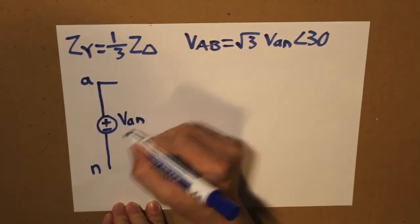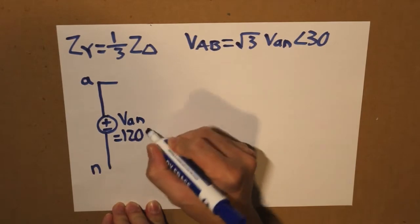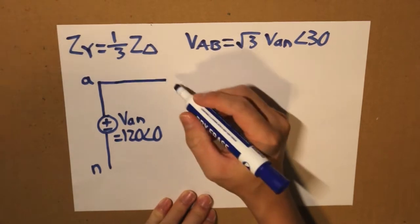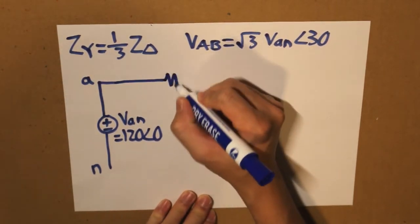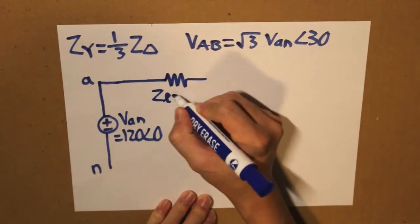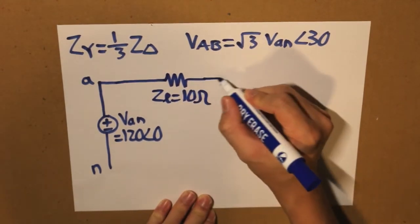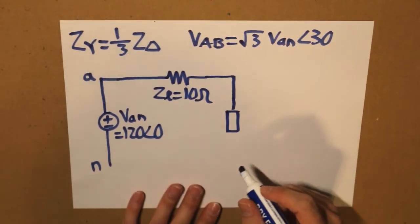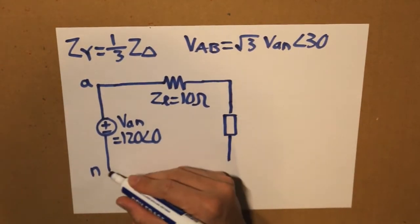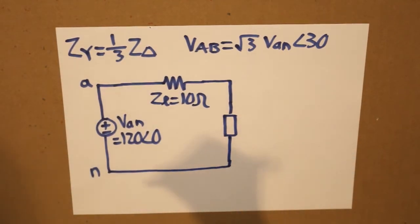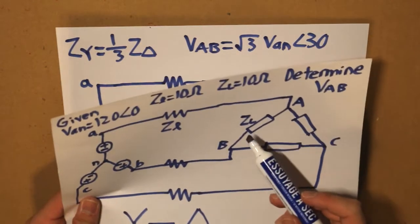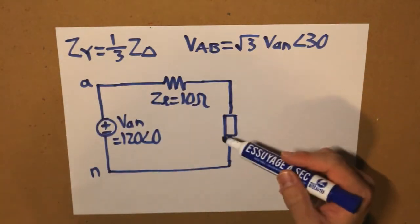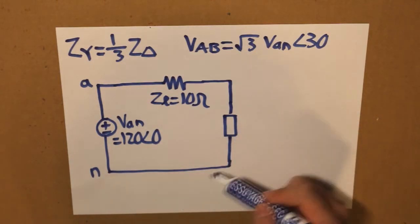So what we get is VAN is equal to 120 zero and then our line impedance is 10 ohms. And then our load impedance. Now this load impedance that I'm going to draw is not this. This is our load impedance in the delta connection. This load impedance is in the Y connection because it's N, right?